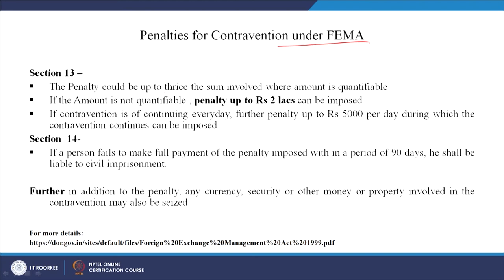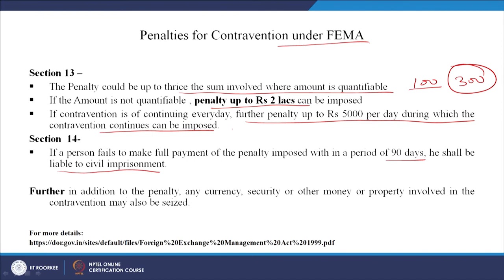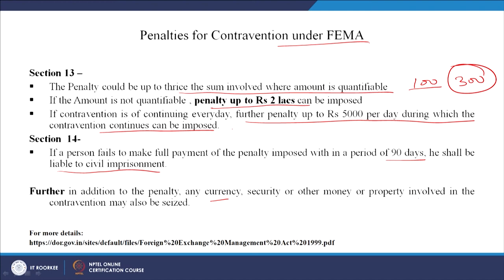What are the penalties under FEMA? The penalty could be up to thrice the sum involved where the amount is quantifiable - so if 100 rupees is involved, the penalty could be up to 300 rupees. If the amount is not quantifiable, a penalty up to rupees 2 lakhs can be imposed. If the contravention is continuing, a further penalty up to rupees 5,000 per day during which the contravention continues can be imposed. As per Section 14, if a person fails to make full payment of the penalty imposed within 90 days, he shall be liable to civil imprisonment. Further, any currency, security, or other money or property involved in the contravention may also be seized.